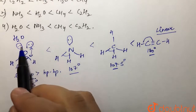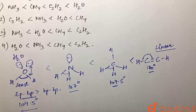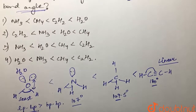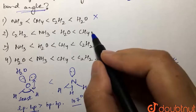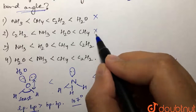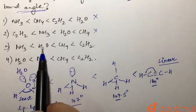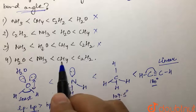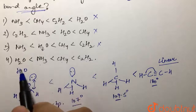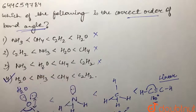So the correct order is: C2H2 > methane > ammonia > water. Looking at the options: water has the minimum bond angle due to two lone pairs — not the maximum. Methane does not have the maximum overall since C2H2 does. The correct order is C2H2, then methane, then ammonia, then water. So the answer is option 4.